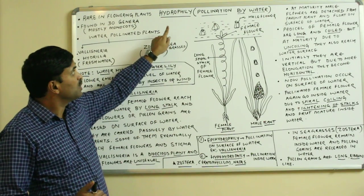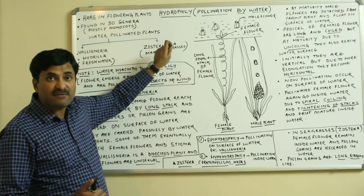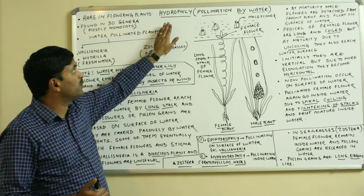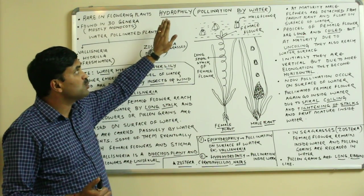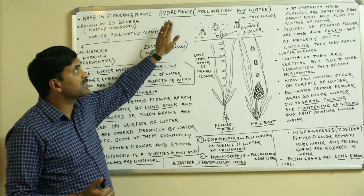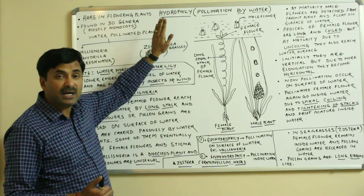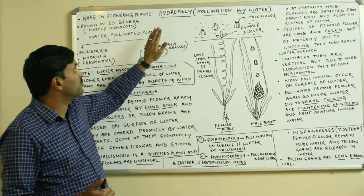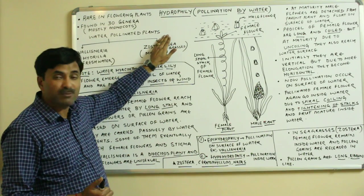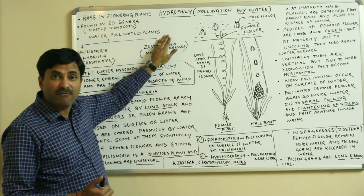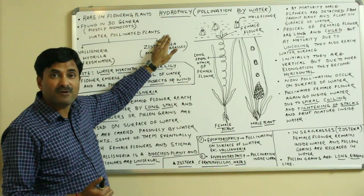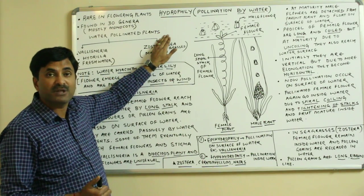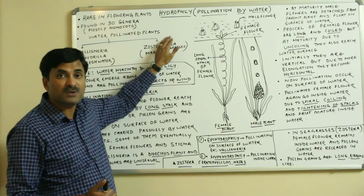So this was the video on how pollination occurs in plants found in water bodies. Keep watching my videos; we will be coming soon with new videos.